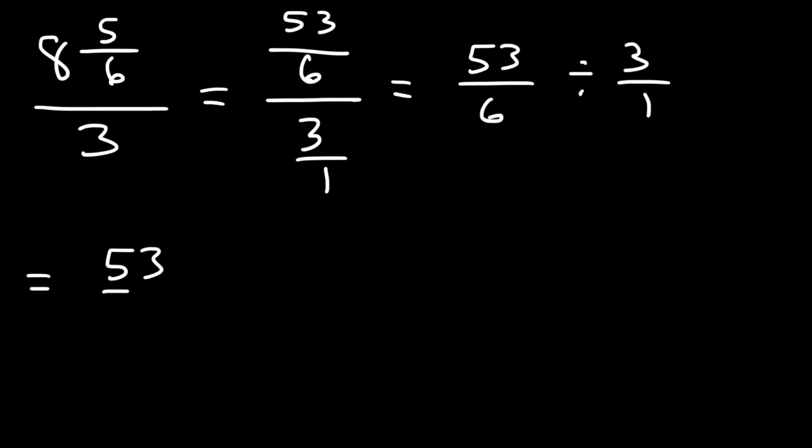So we know this is going to be 53 over 6 divided by 3 over 1, which is 53 over 6 times 1 over 3. So if we multiply across, that's 53 over 18.